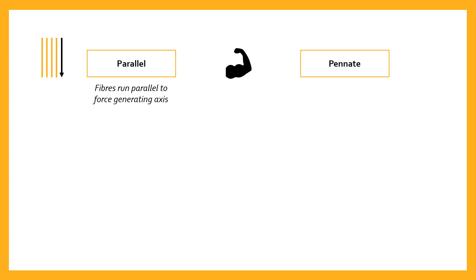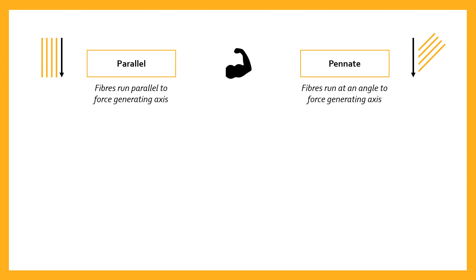The second category is pennate. Pennate muscles are muscles in which the fibers are not parallel but at an angle to the force generating axis. Because of the layout of the tendons, the force produced by the fibers when they contract is not parallel to the fibers themselves. Instead, the fibers run at an angle to the overall force generating axis, as shown in the diagram in the top right-hand corner.